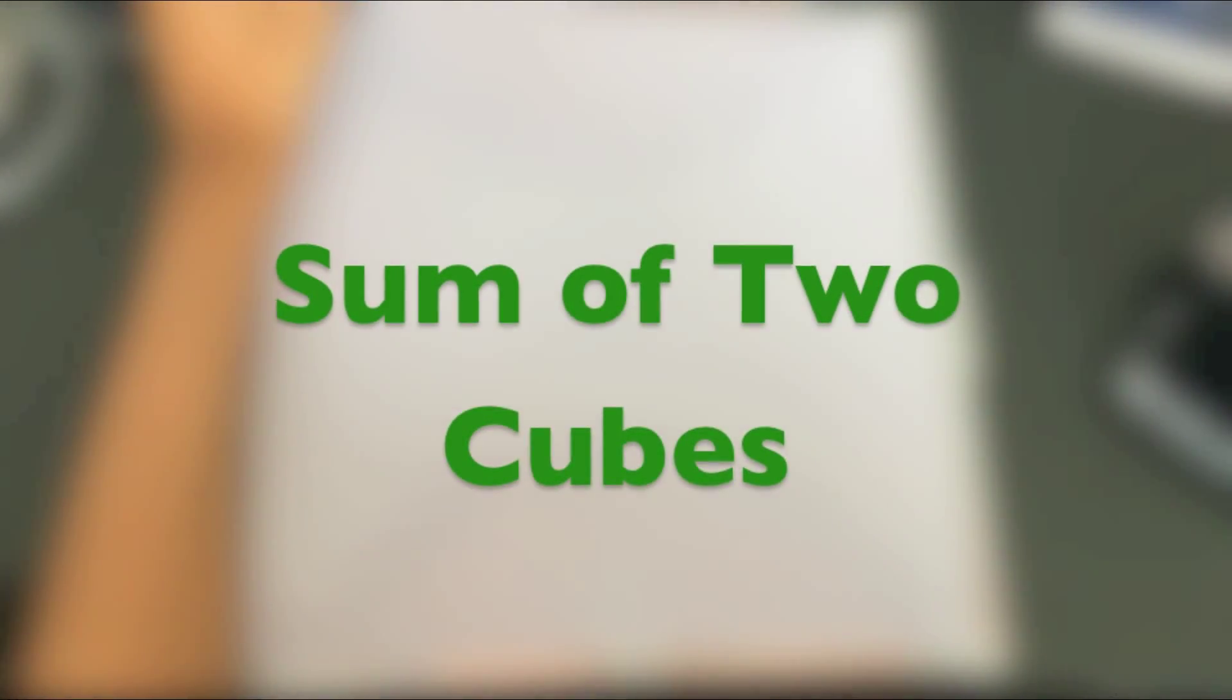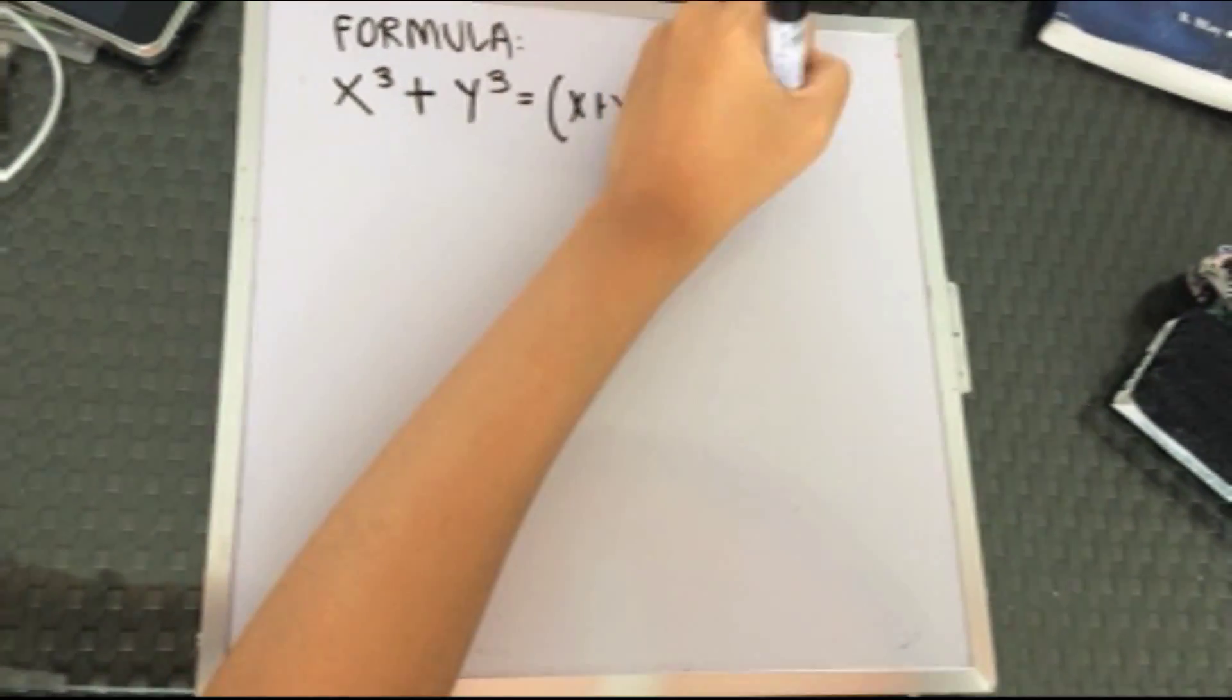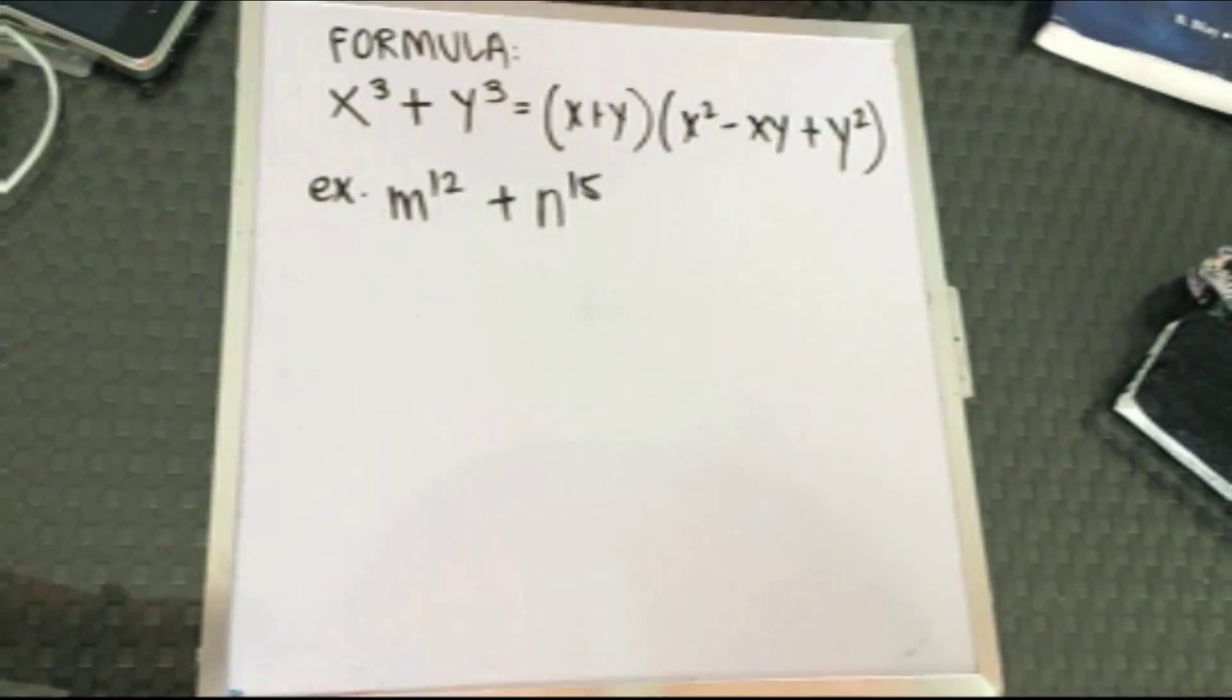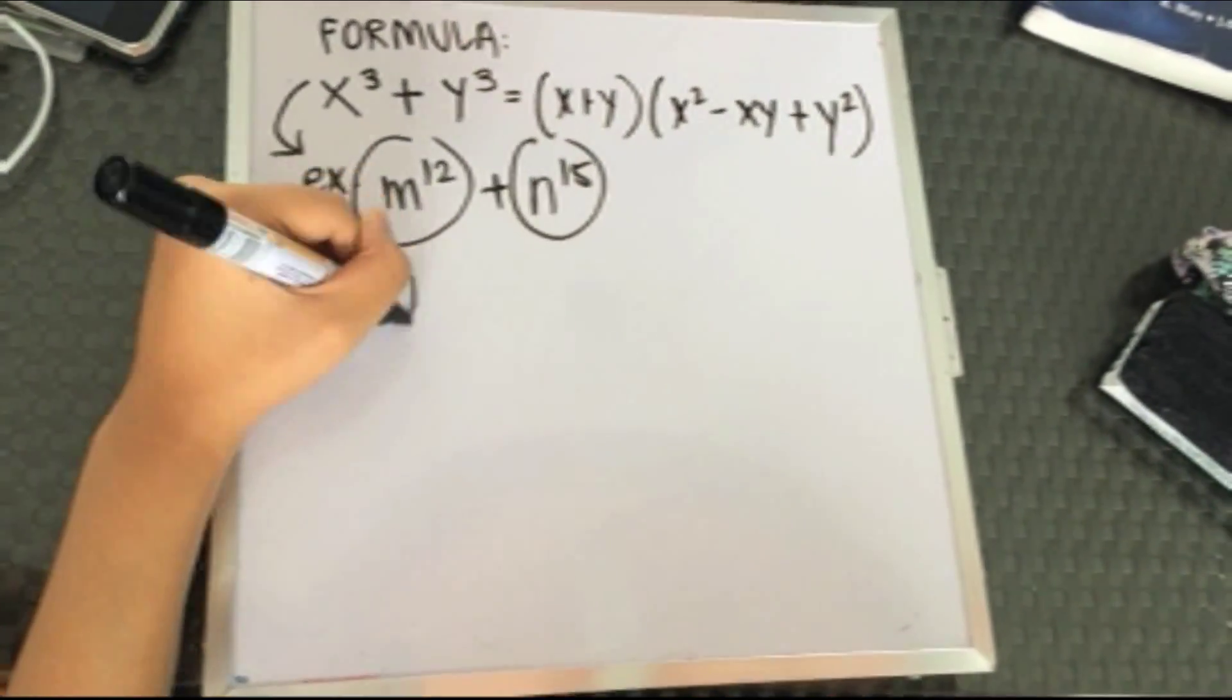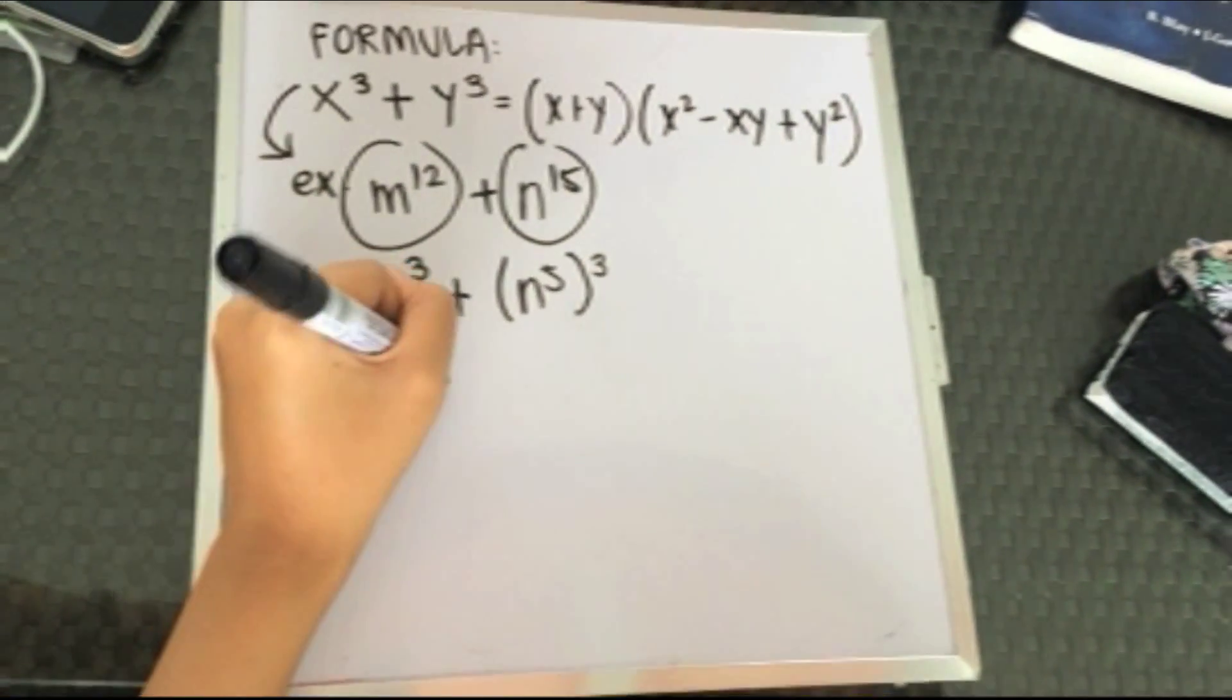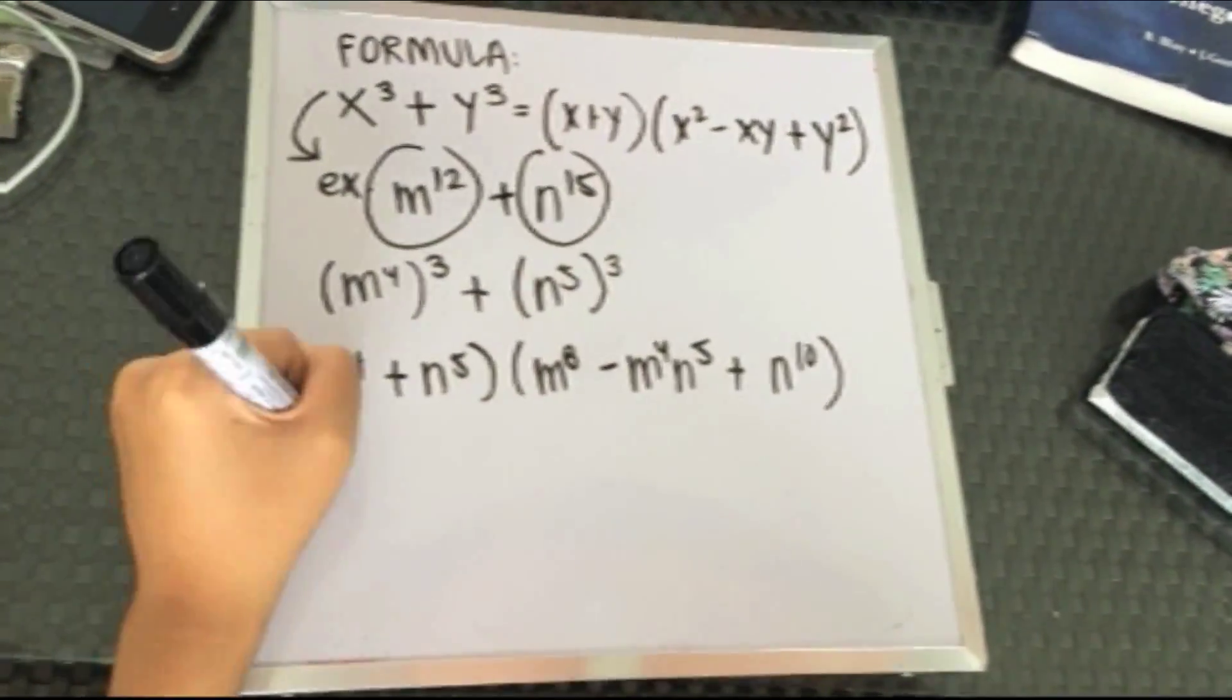The formula is x cubed plus y cubed equals x plus y times x squared minus xy plus y squared. Get the cube root of m to the power of 12 and n to the power of 15. Apply the formula. This is your final answer.